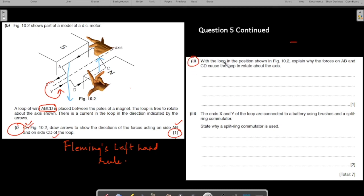The second part. With the loop in the position shown in this figure, explain why the forces on AB and CD causes the loop to rotate about the axis. Why is there a rotation? Just a one mark question. Give one point. What is happening here? Think about it. Use the principle of forces. Think in terms of what you have learned in forces. This is moment.